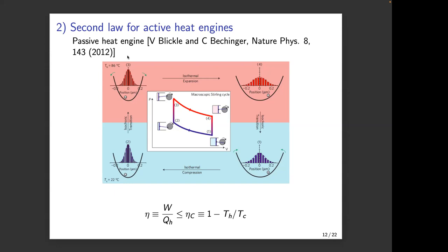Since Seifert and Schmiedl's 2008 paper, there has been lots of work on small heat engines operating at finite time. The efficiency — extracted work divided by heat taken from the hot reservoir — must be smaller than the Carnot efficiency. That bound is always true.